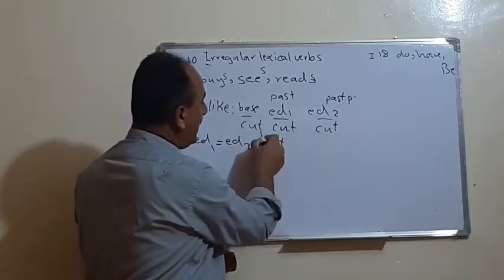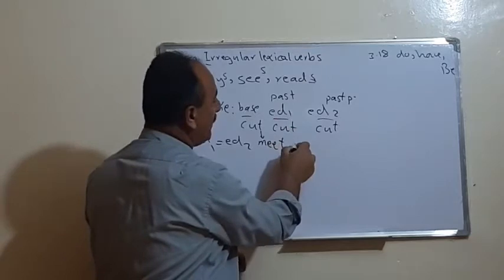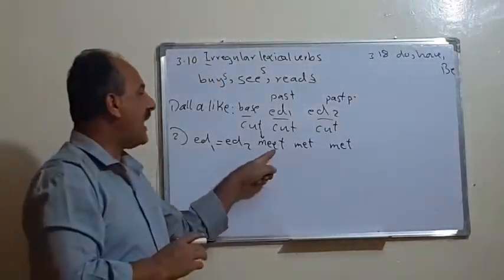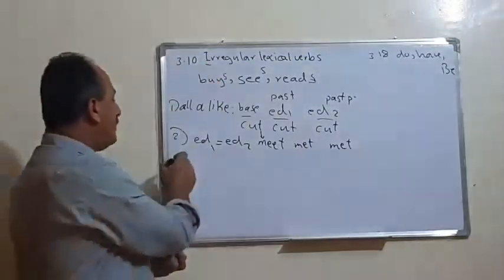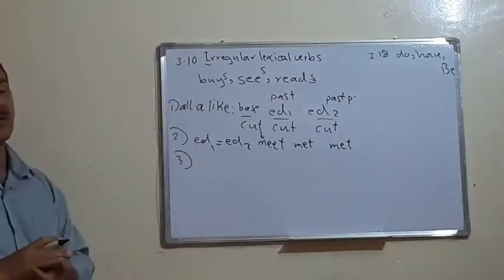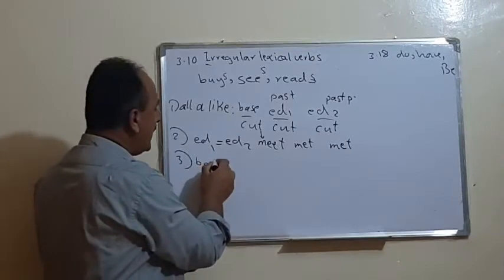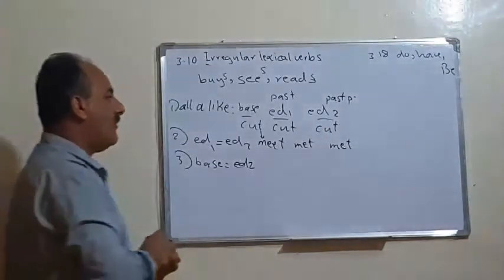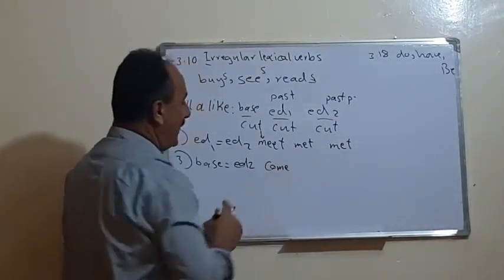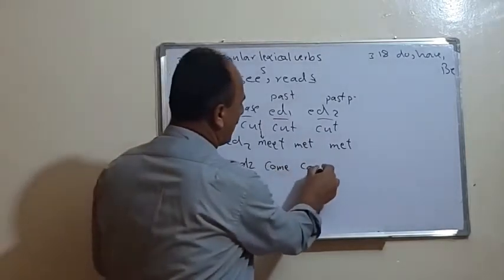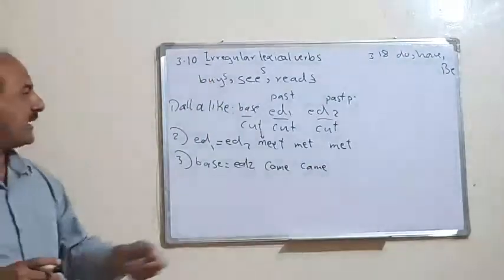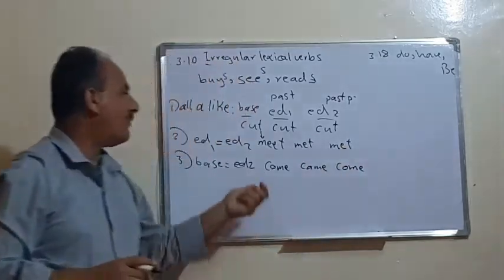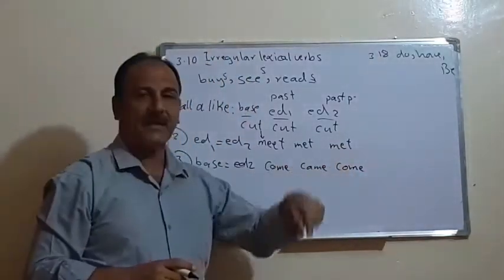For example, the verb 'meet': the base is 'meet', the past is 'met', and the past participle is also 'met'. The third group of irregular verbs is when the base equals ed2 — meaning the base is similar to the past participle. For example, the verb 'come': the past is 'came', but the past participle is 'come' again. Similarly, 'become': become, became, become.